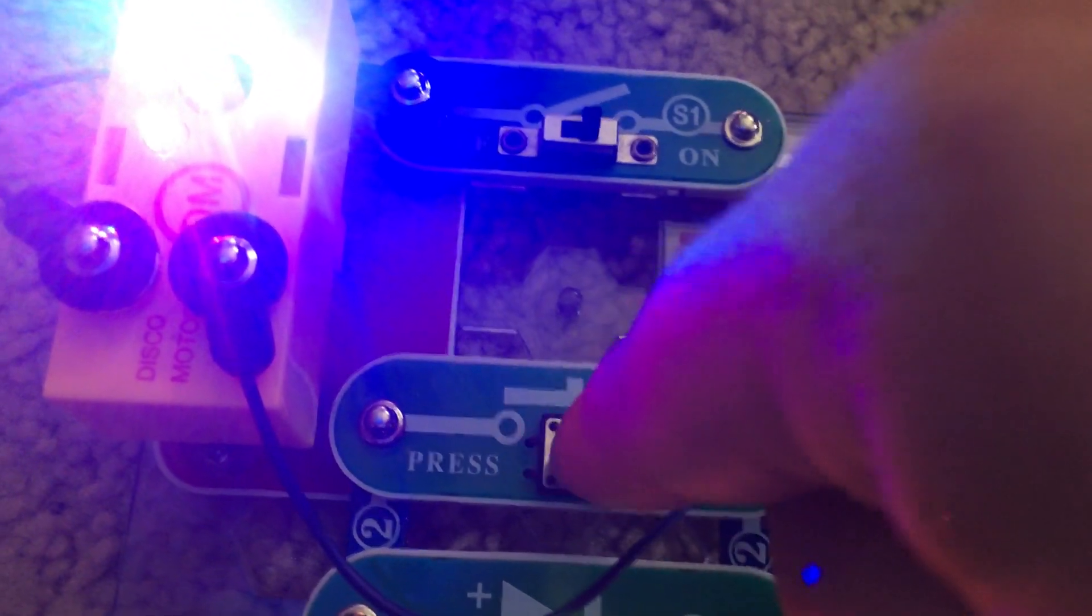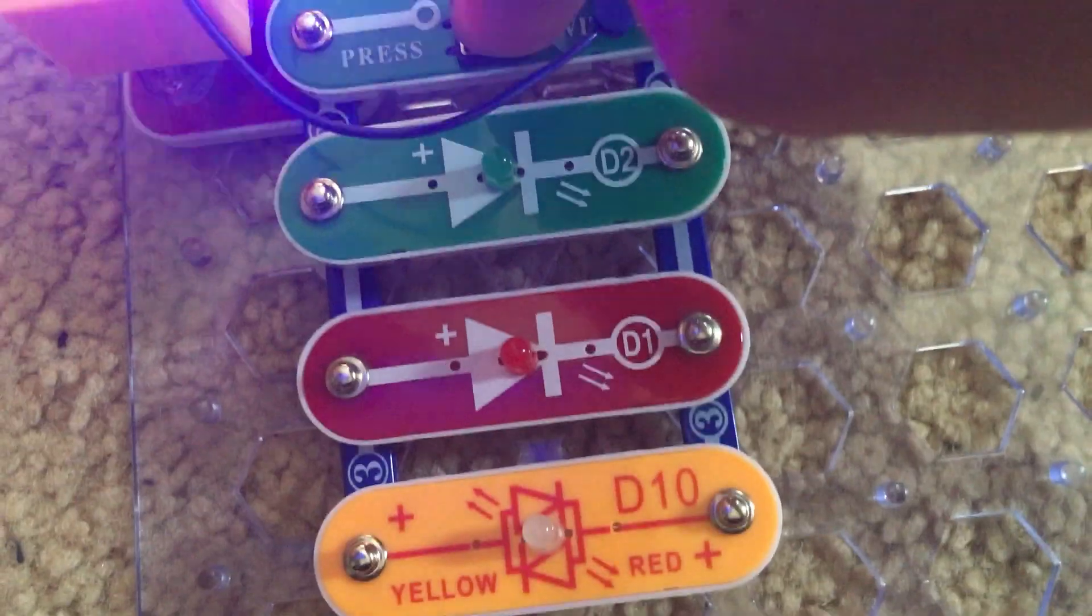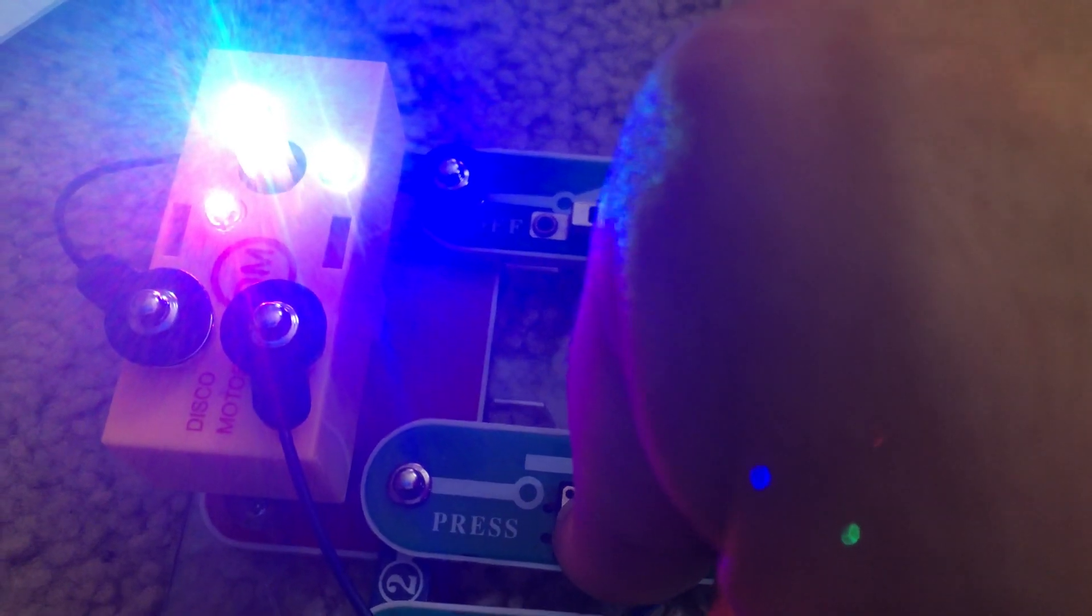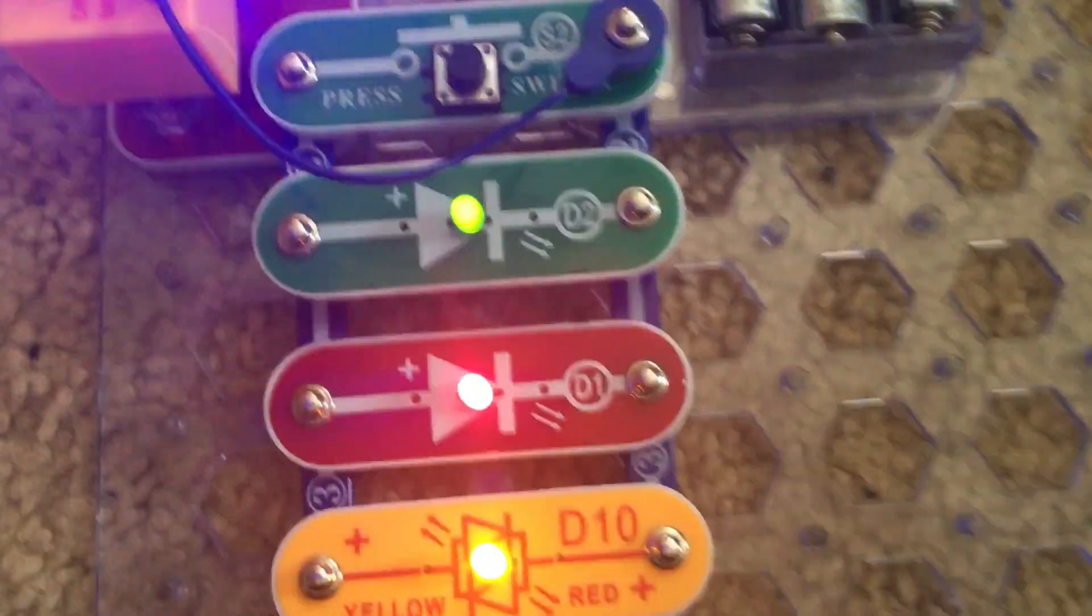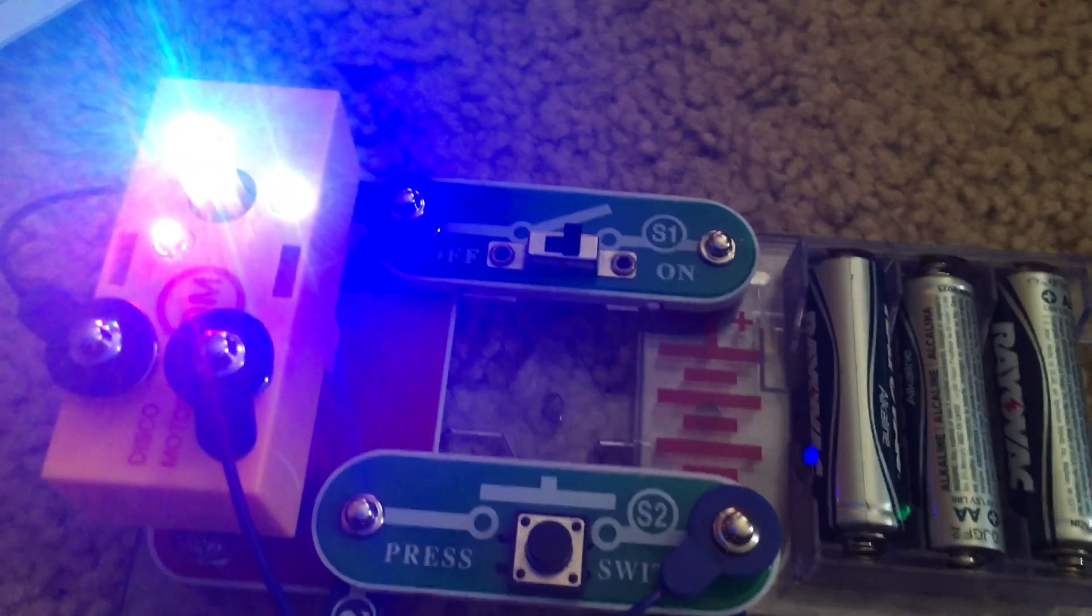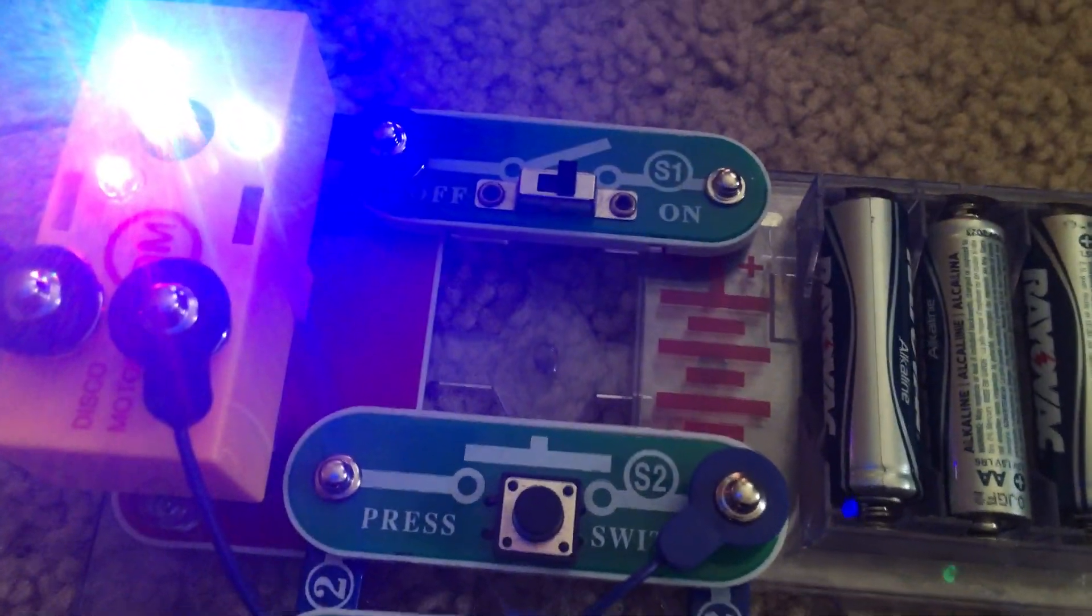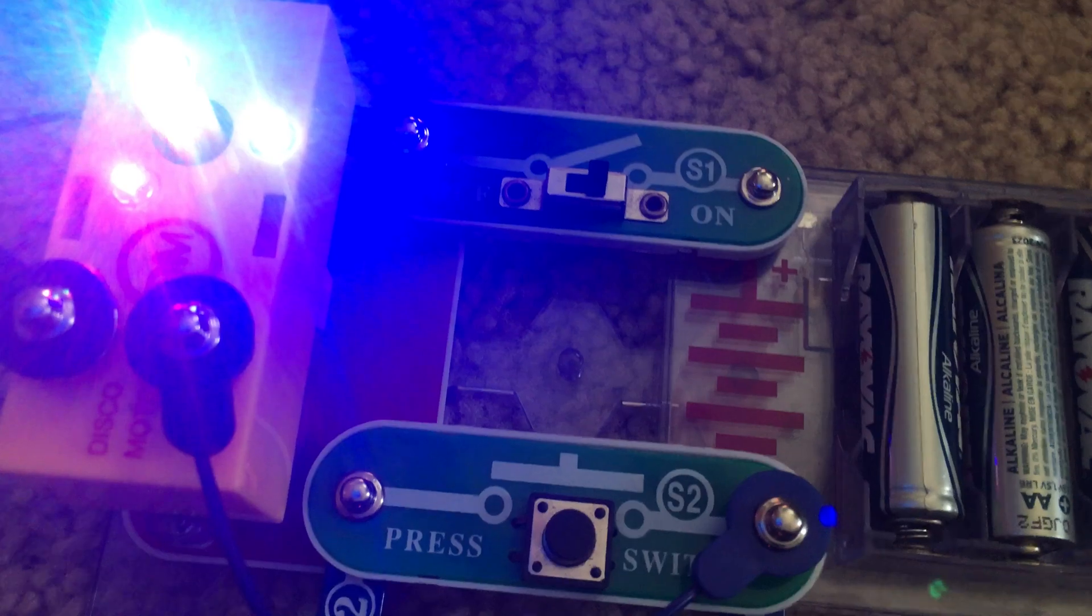I am going to hold down the press switch. Holding it down turns the main LEDs off, but now the motor can spin at full speed. Release it. The main LEDs come back on and the motor slows. It is now traveling at medium speed.